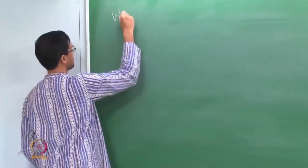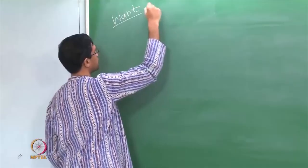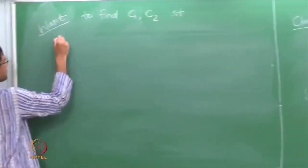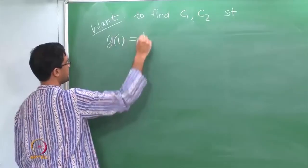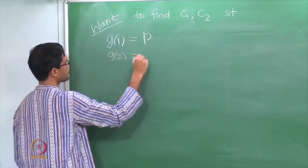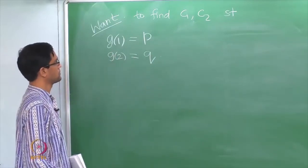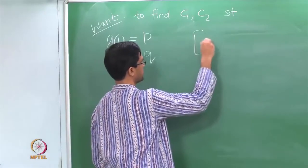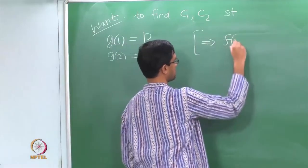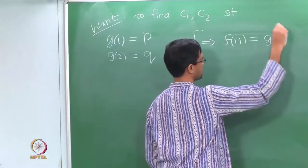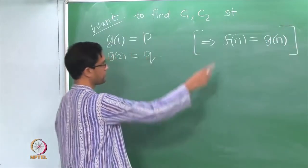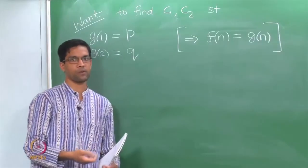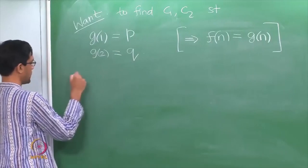Now the problem reduces to finding constants C1 and C2 such that G of 1 equals the required initial condition p and G of 2 equals the required initial condition q. If we can do this, then f and G would automatically be equal, and that gives a formula for f of n since G of n is C1 r1 to the n plus C2 r2 to the n.